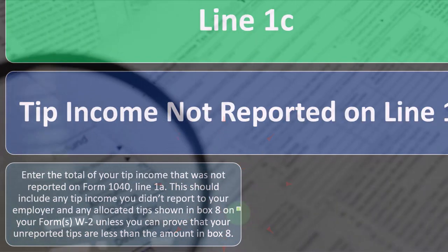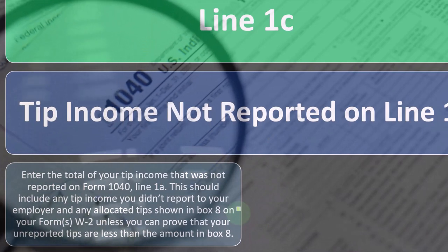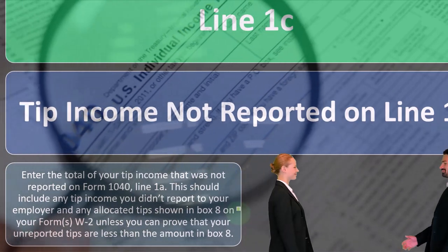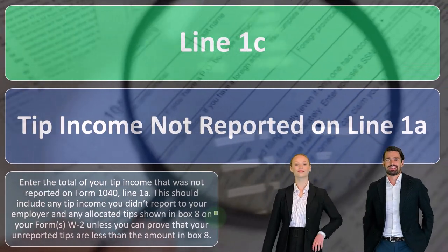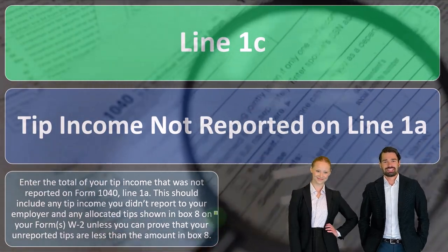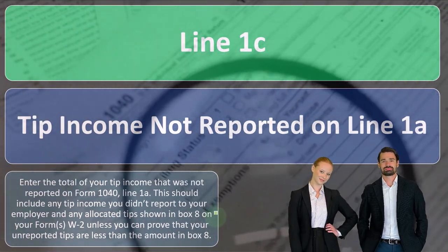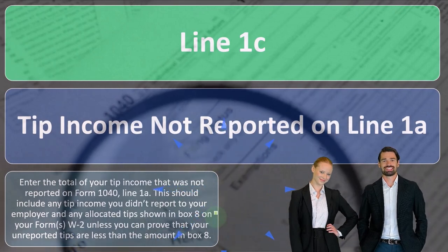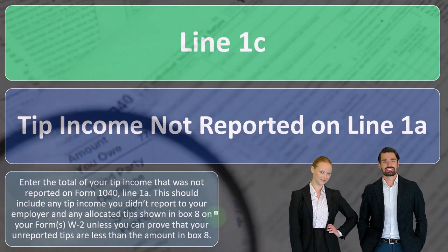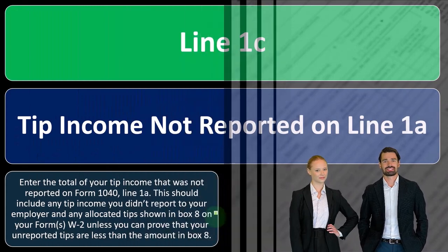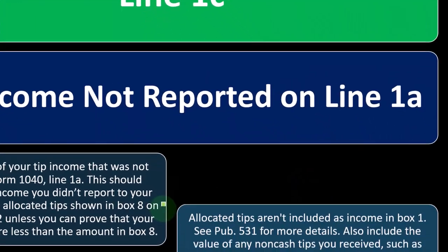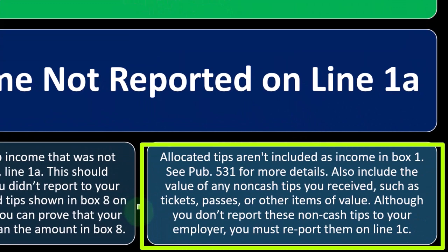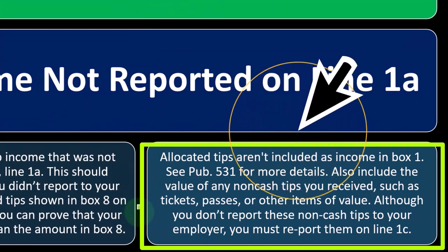If tips are part of your income in Box 1, they'll be included in income. If they're in Box 8, you have tip income to report. Usually when you enter this into the software, it'll help you determine the correct line. If you don't have any reported tips but you did earn tips, you should still report that income under the general rules of the tax code, even if you didn't receive documentation on it. Allocated tips aren't included as income in Box 1.